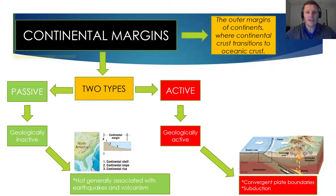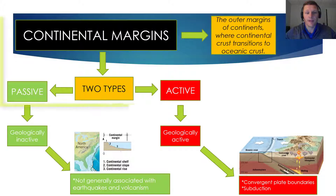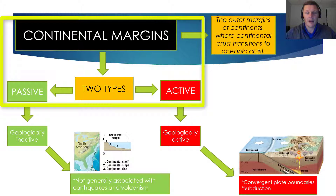By definition, continental margins are the outer margins of continents, where continental crust transitions into oceanic crust. There are two types of continental margins: passive and active continental margins.